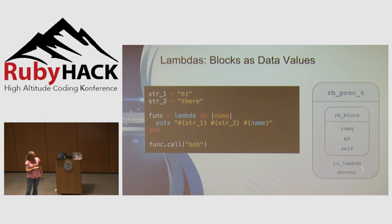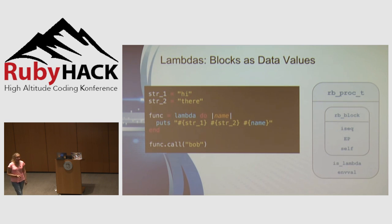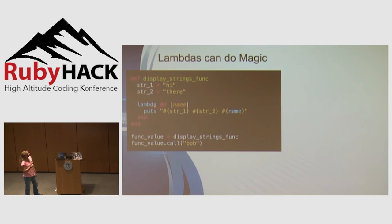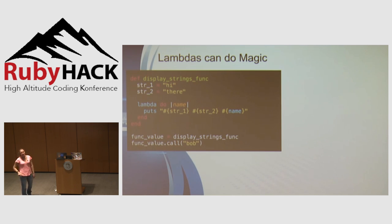Lambdas are blocks as data values, and they are even cooler than that. Consider display_strings_func: a simple method with two local variables that creates a lambda using those variables, returns that lambda as the return value, and we then call it. If you know how stacks work, you'll know this is quite amazing — because when the method exits, the entire stack frame gets wiped off the stack along with all references to the local variables, which would normally mean they get garbage collected.